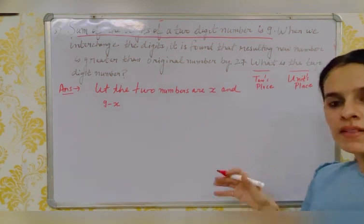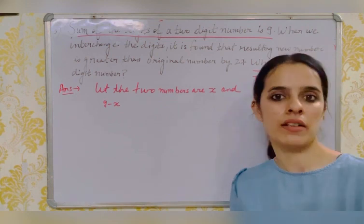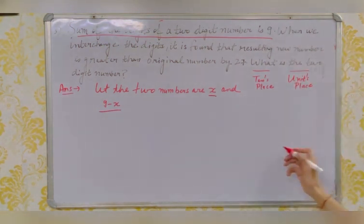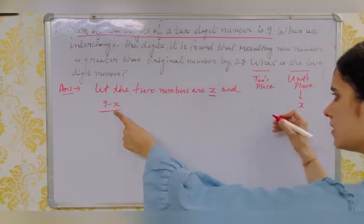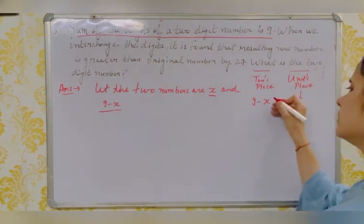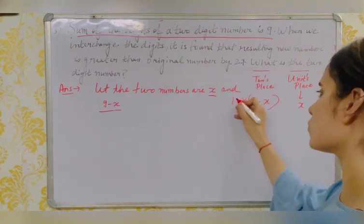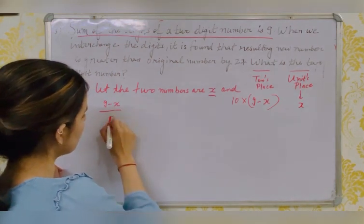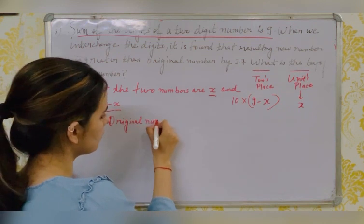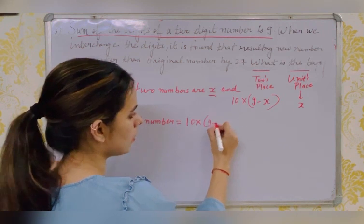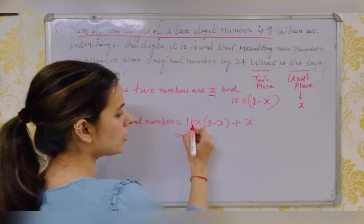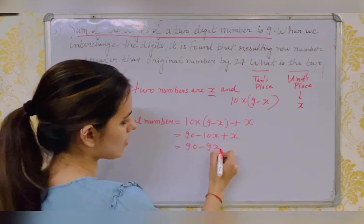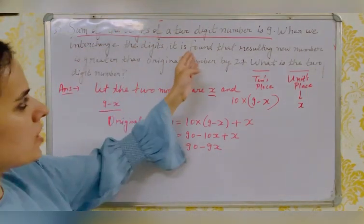You need to understand place values: units place and tens place. Fix x at the units place and (9 − x) at the tens place. Since it is at the tens place, multiply it by 10. So the original number = 10(9 − x) + x = 90 − 10x + x = 90 − 9x.